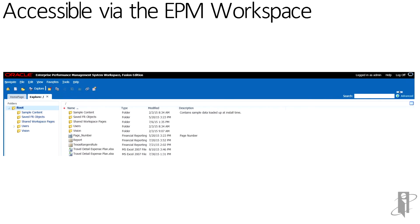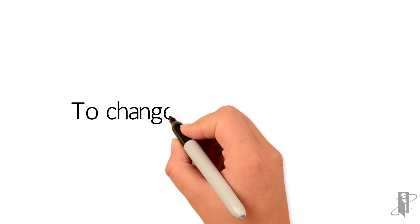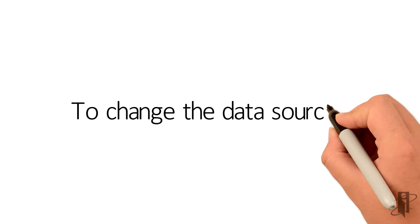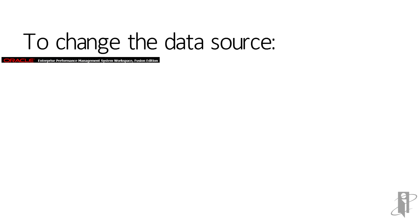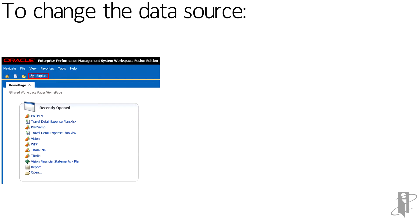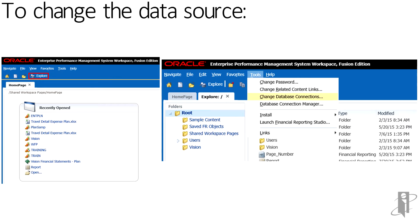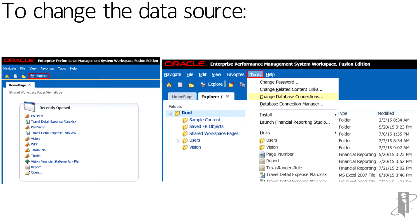You can change the database connection when moving from a development environment server to a production environment server. To change the data source from the EPM Workspace, select Explore, then Tools, and then Change Database Connections.